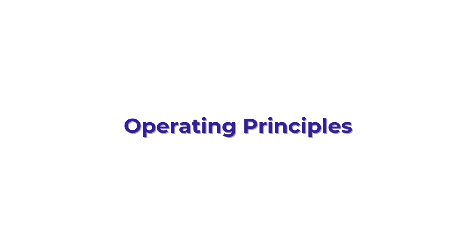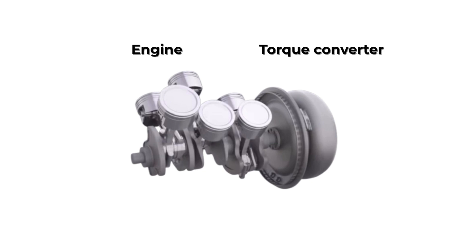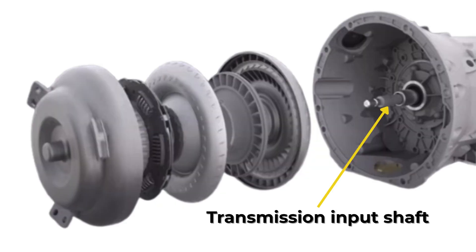Let's start with the operating principles. Step 1: When the driver shifts into drive and presses the accelerator, the engine's crankshaft begins to rotate. This rotation increases fluid pressure inside the torque converter, which transfers engine power to the transmission's input shaft.